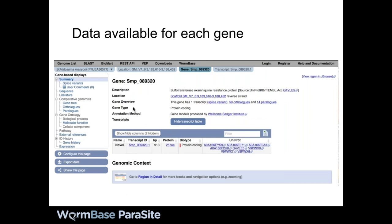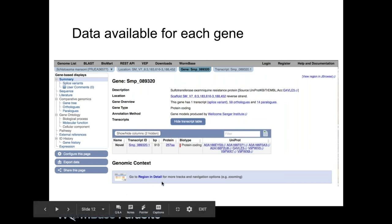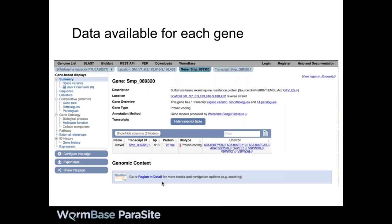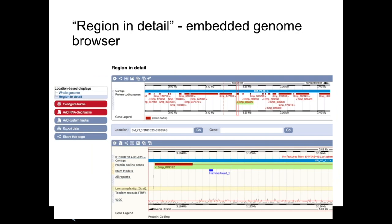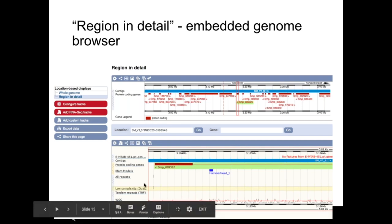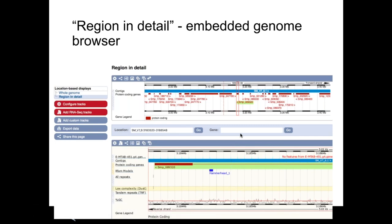There is a way to go from the gene page to a detailed region view, which shows the gene model in the context of where it is on the chromosome. This embedded genome browser shows a number of different tracks — repetitive elements, neighboring genes — and you can scroll around, search, and also attach your own data to this page by going to the 'add custom tracks' option to upload and view your data in the context of our site.